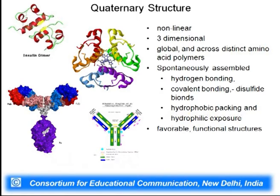Looking at quaternary structure examples: insulin undergoes disulfide bond formation resulting in its tertiary structure, and we see a hexamer of insulin. Immunoglobulin has several chains attached covalently. Both are examples of proteins undergoing covalent interactions to result in quaternary structure. Quaternary structure is the level next to tertiary where subunits of tertiary protein are placed in space for some functional reason.